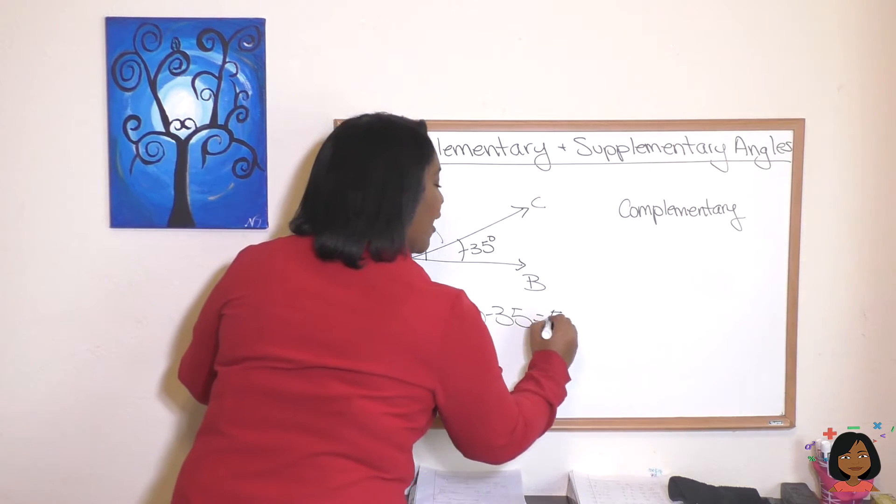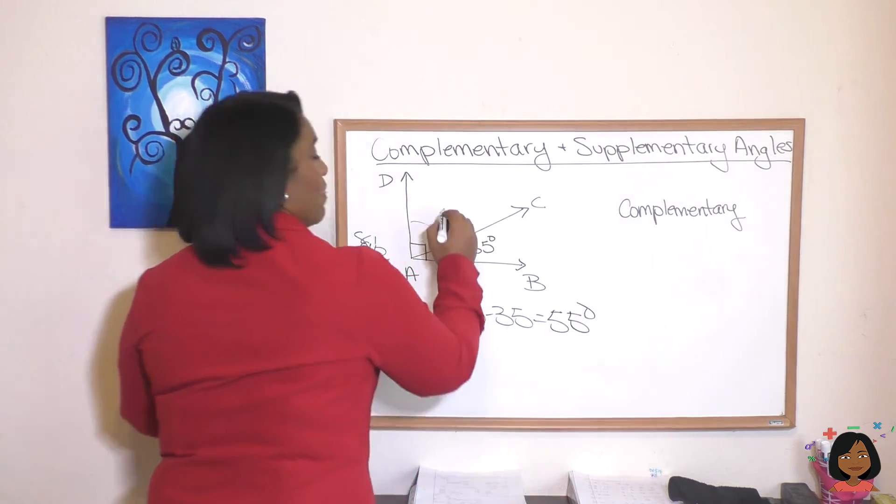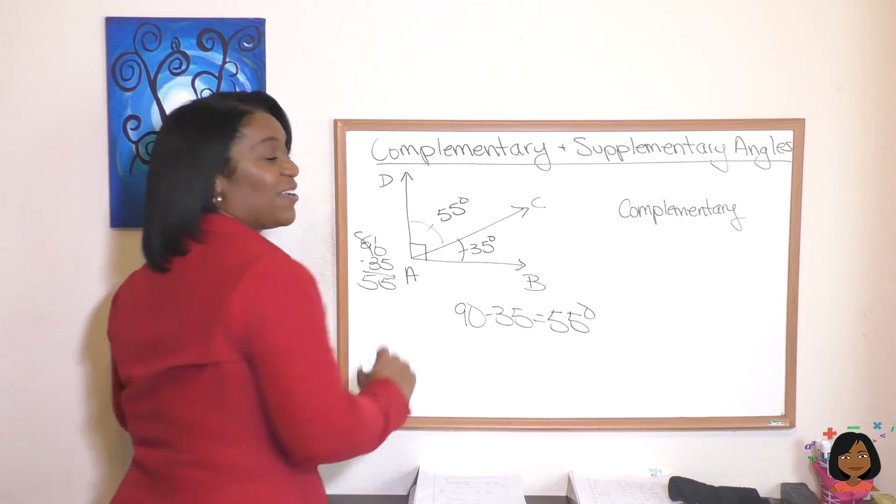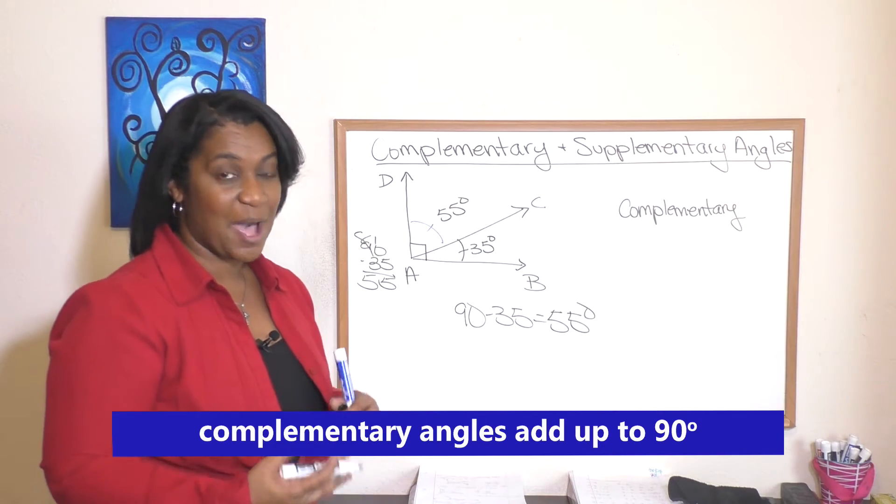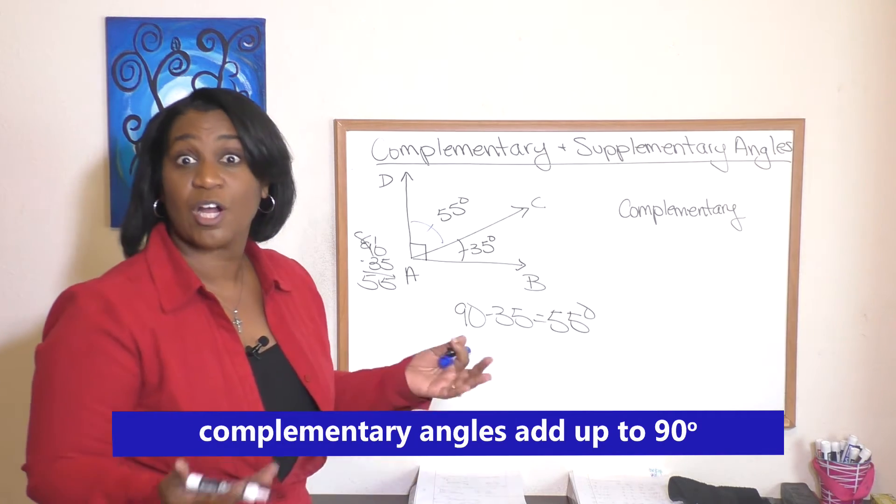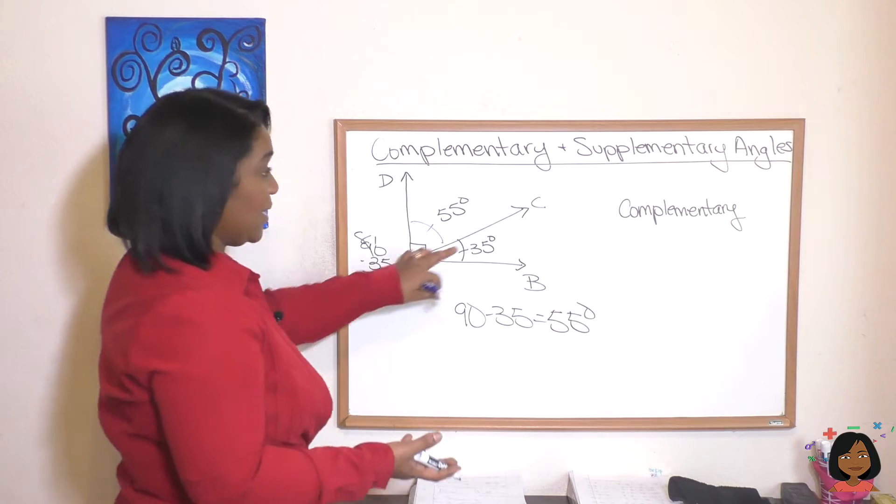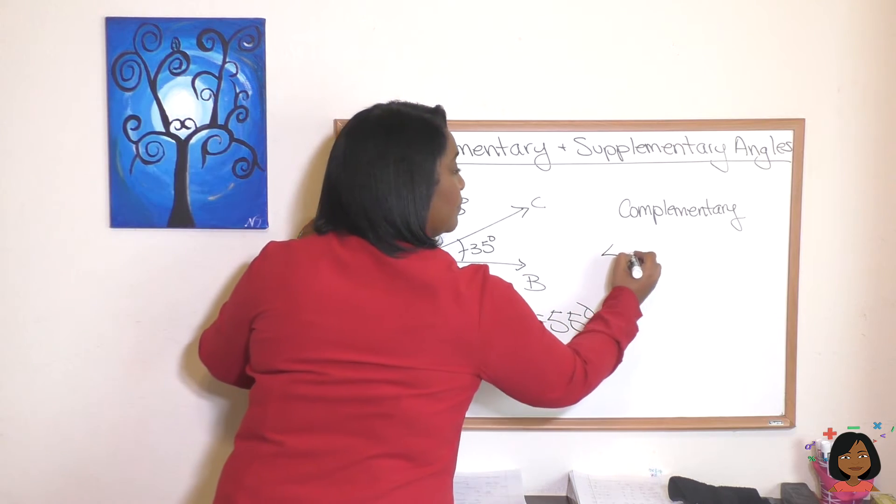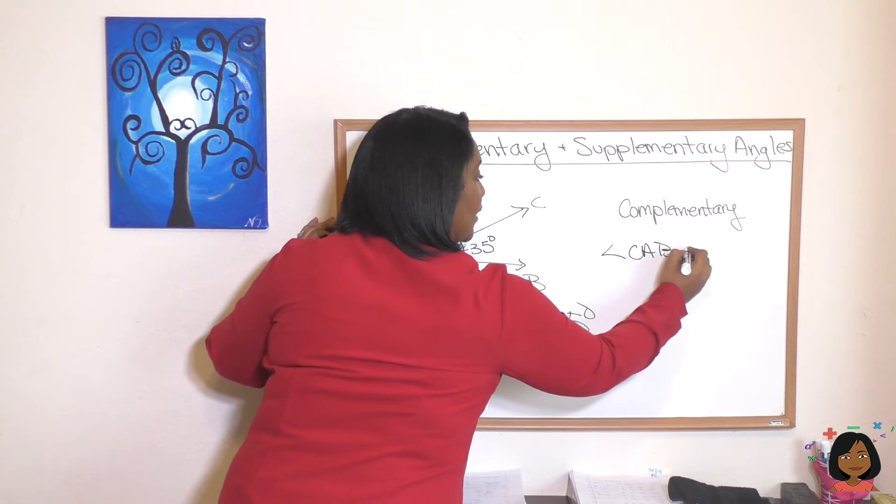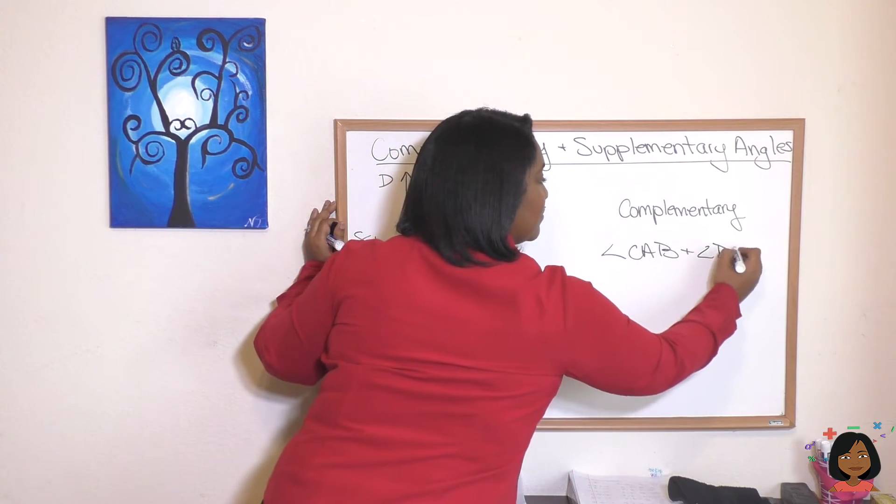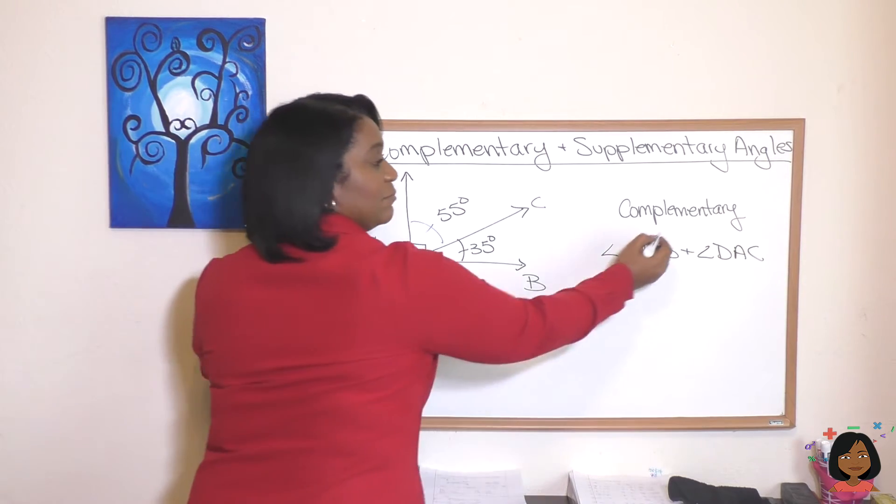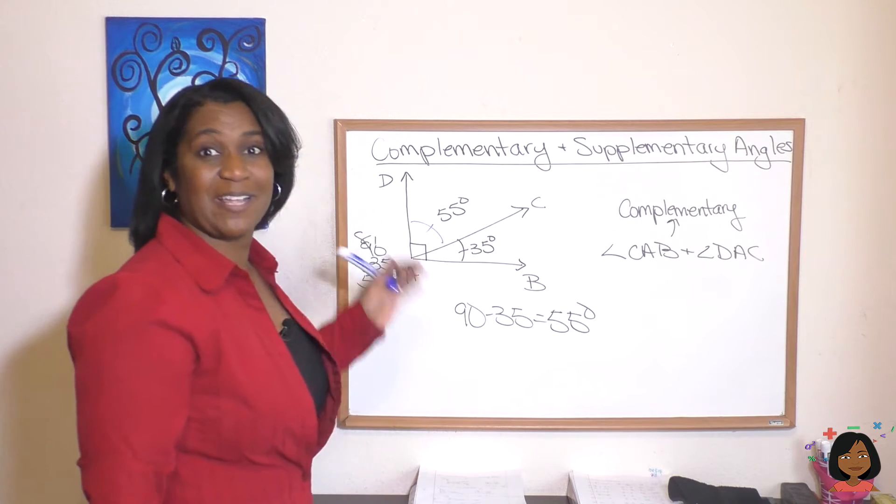That means that what's left is 55 degrees. That's the size of this angle. That means two angles that add up to 90 degrees are called complementary. So that means that angle CAB and angle DAC are complementary. They add up to 90 degrees.